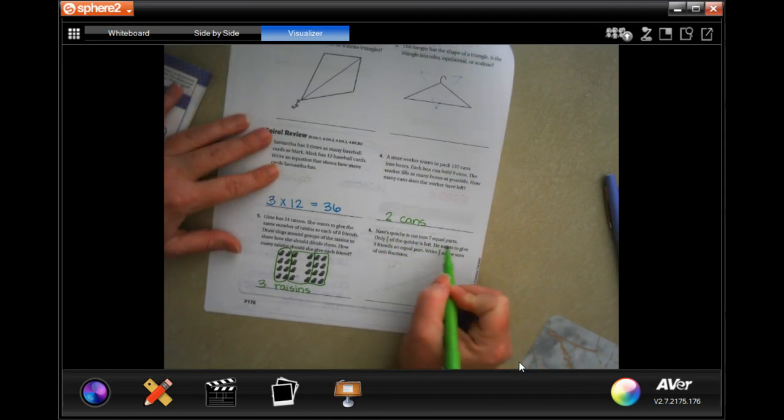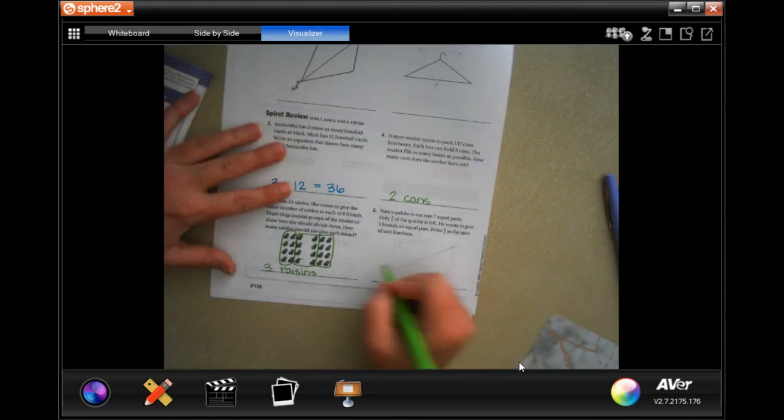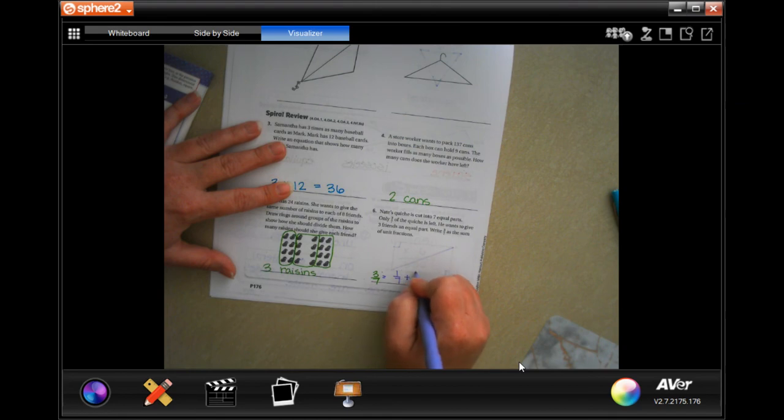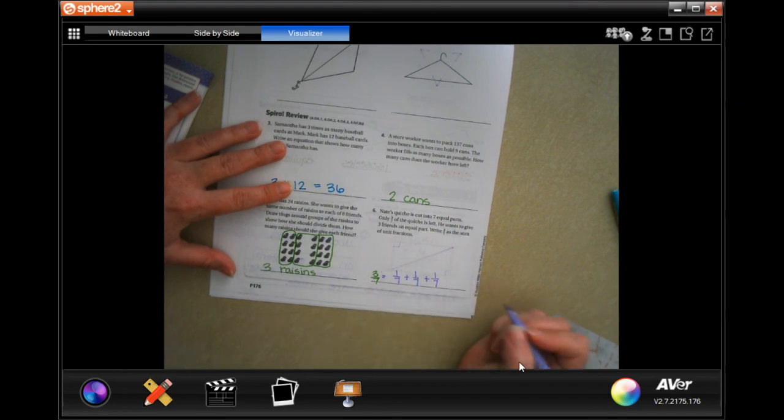Nate's quiche is cut into seven equal parts. Only three sevenths of the quiche is left. He wants to give three friends an equal part. Write three sevenths as the sum of unit fractions. Well, so three sevenths is equal to one seventh plus one seventh plus one seventh. Done.